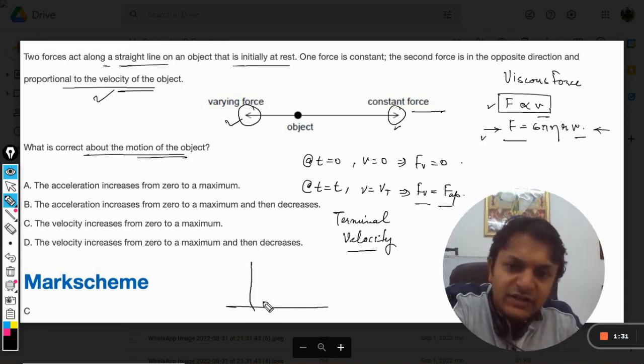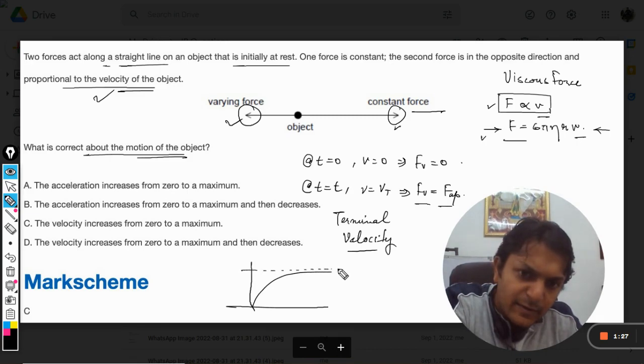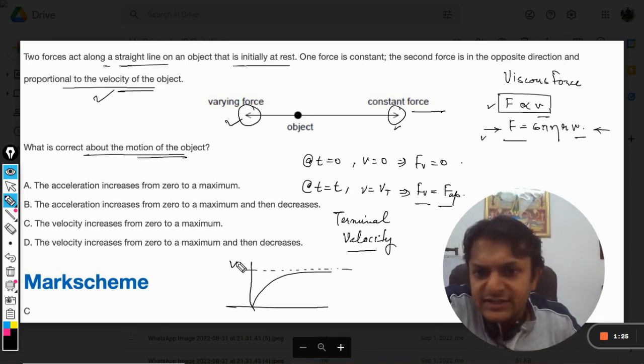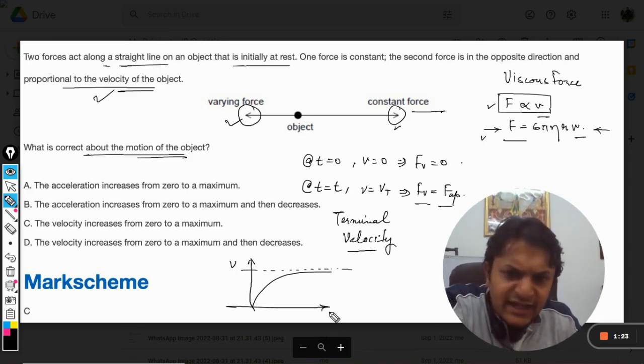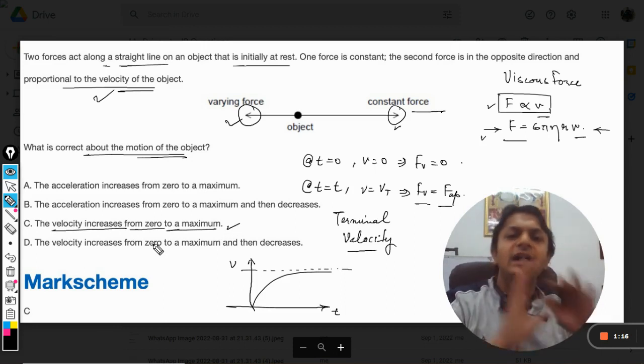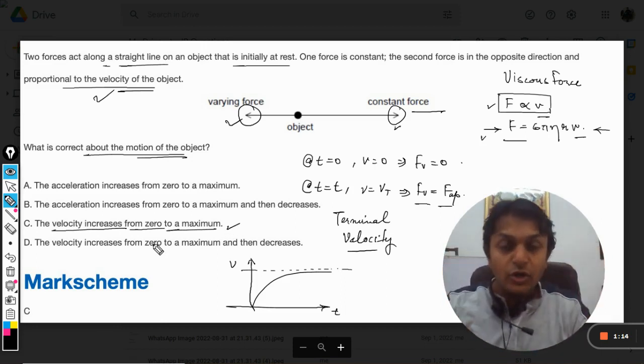So your graph will be somewhat like this. So this is the velocity and this is time. Fine. So the velocity increases from 0 to a maximum value and then it becomes constant.